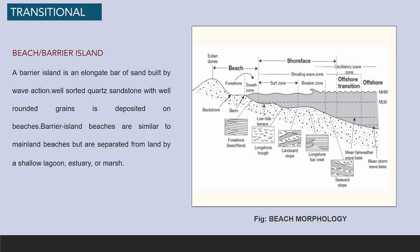The next example of transitional environment is beach or barrier island. A barrier island is an elongated bar of sand built by wave action. Well-sorted quartz sandstone with well-rounded grains is deposited on beaches. Barrier island beaches are similar to mainland beaches but are separated from land by a shallow lagoon, estuary, or marsh.